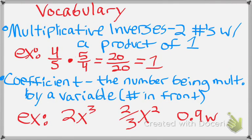So, two vocabulary words we need to understand what we're going to do in this section. We're going to talk about multiplicative inverses. That is two numbers with a product of one. For example, if you have four-fifths and you take the reciprocal of that — multiplicative inverse is a fancy word for reciprocal.